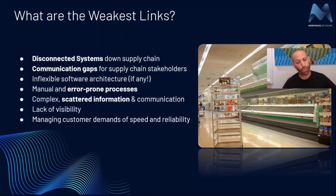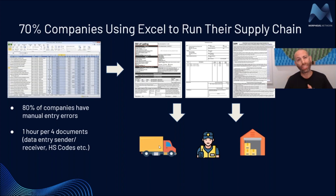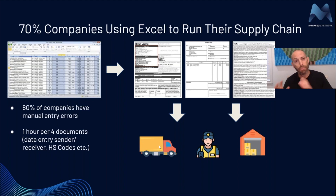The result is scattered information all the way down the supply chain. You lose visibility, and you can't manage your customers' demands because of all these weak links. On the ground level, supply chain managers trying to run their logistics — over 70% of them are still using Excel, copying and pasting out of spreadsheets. 80% of those companies have manual errors when it comes to manual data entry into documents.